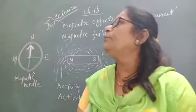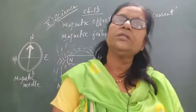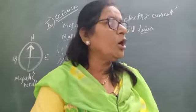So how to know the poles of these magnets? The needle pointing towards the upper side, that is north; lower side, that is south pole of the magnet.